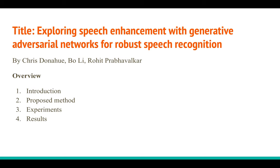Hello everyone, welcome back to my channel 'Deep Understanding of Research Papers.' Today I am going to explain a paper called 'Exploring Speech Enhancement with Generative Adversarial Networks for Robust Speech Recognition.' This paper is around two years old, released in 2017 by a couple of people from Google and a researcher from University of California San Diego (UCSD). Rohit Prabhakar is one research scientist at Google who has published many papers on speech recognition.